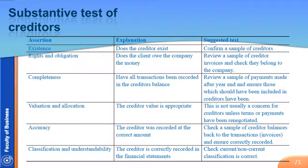Finally, classification and understandability — that the creditor is correctly recorded in the financial statements. We want to check particularly that the current and non-current classification is correct. This is particularly important if there is a debt covenant, because the classification of non-current and current liabilities can affect whether or not the client is in breach of the debt covenant. So that's a brief rundown of substantive test of creditors.